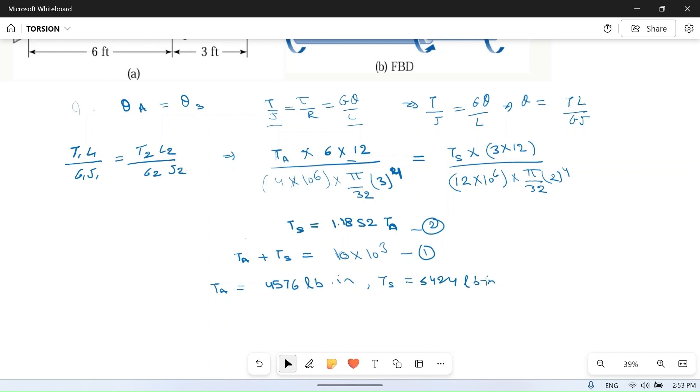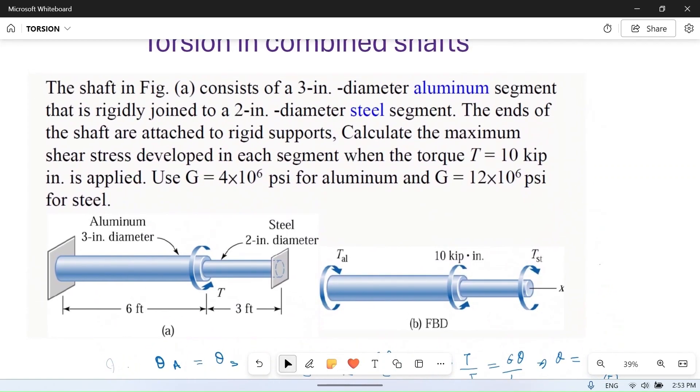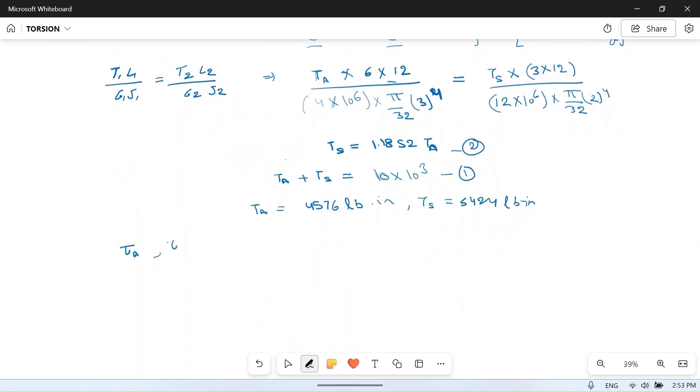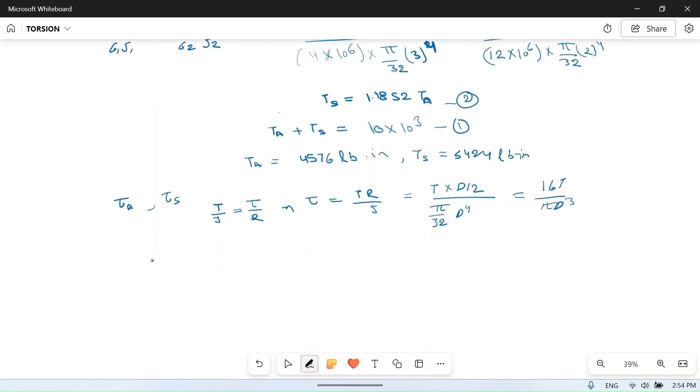Now we find the maximum shear stress in each segment: τ_aluminum and τ_steel. From T/J = τ/r, we get τ = Tr/J. Substituting r = d/2 and J = πd^4/32, we get τ = 16T/(πd^3). So τ_aluminum = 16 × 4576 / (π × 3^3) = 863 psi. Similarly,